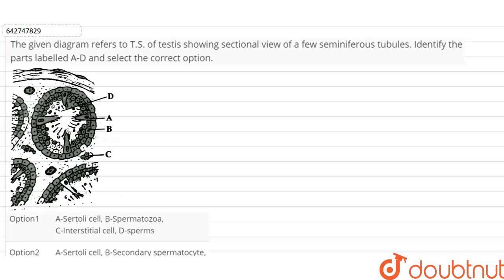In this question, we have been given a diagram showing the transverse section of a testis in which we can see the sectional view of seminiferous tubules. Now we have to identify the parts which have been labeled A, B, C and D and select the correct option.